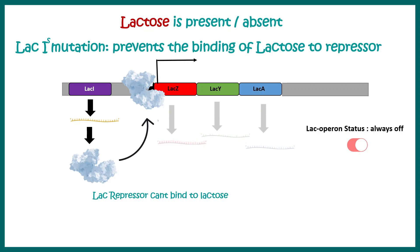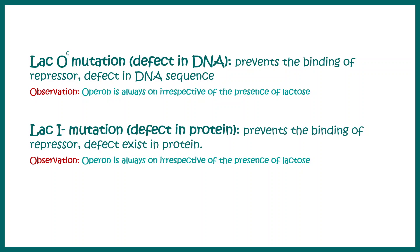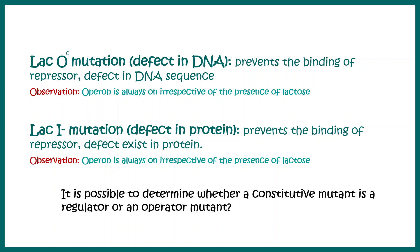Now let's understand which mutations act in cis and which act in trans. Both lac Oc and lac I⁻ produce a constitutively active lactose operon, but scientists initially had no clue whether the mutation was in the protein or in the operator DNA region. They used the merozygote approach to classify where the mutation occurred.